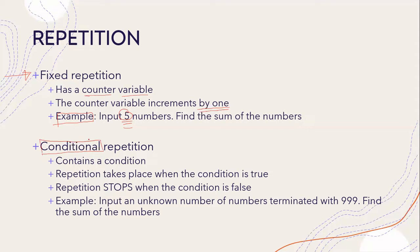The other form of repetition is conditional repetition. With conditional repetition, we are unsure of how many times the repetition will actually take place. It depends on when a particular condition is met. So the repetition takes place as long as the condition is true, and the repetition stops when the condition is false. An example would be to input an unknown number of numbers.